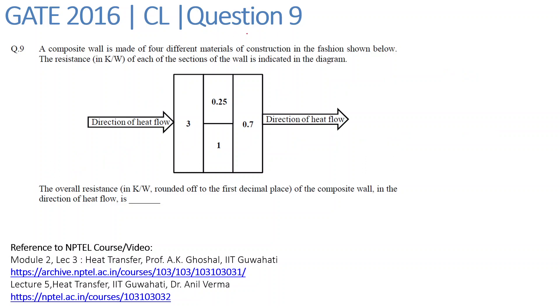Hello everyone, we are looking at Question 9 of GATE 2016 Chemical Engineering paper, and the subject is heat transfer. The question is: a composite wall is made of four different materials of construction in the fashion shown below.